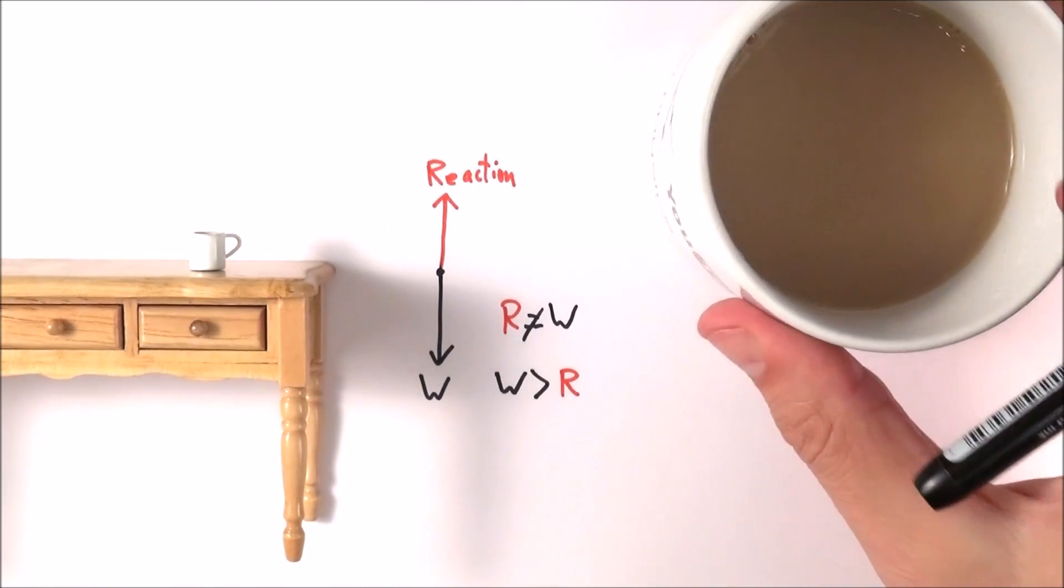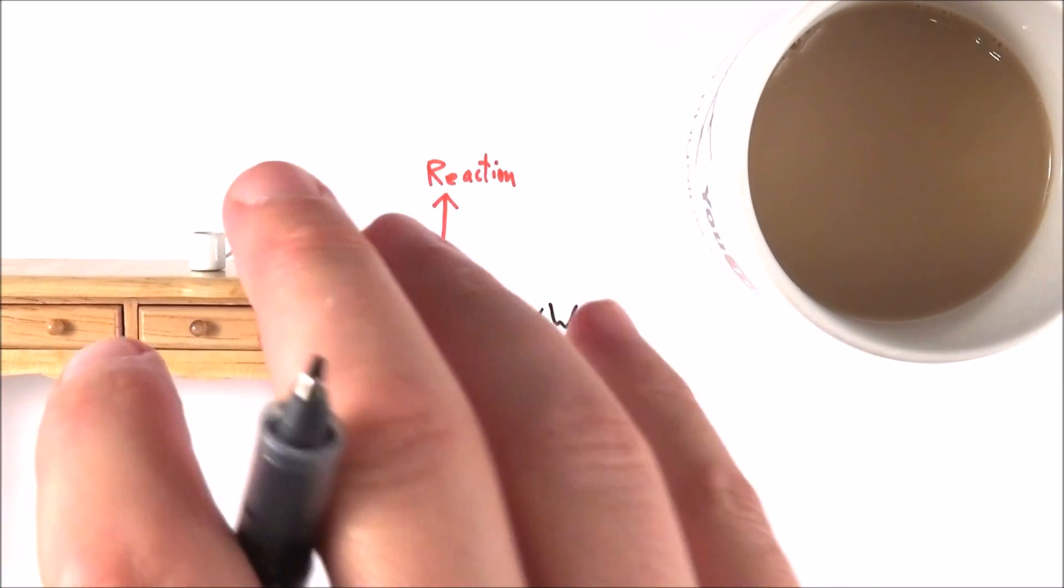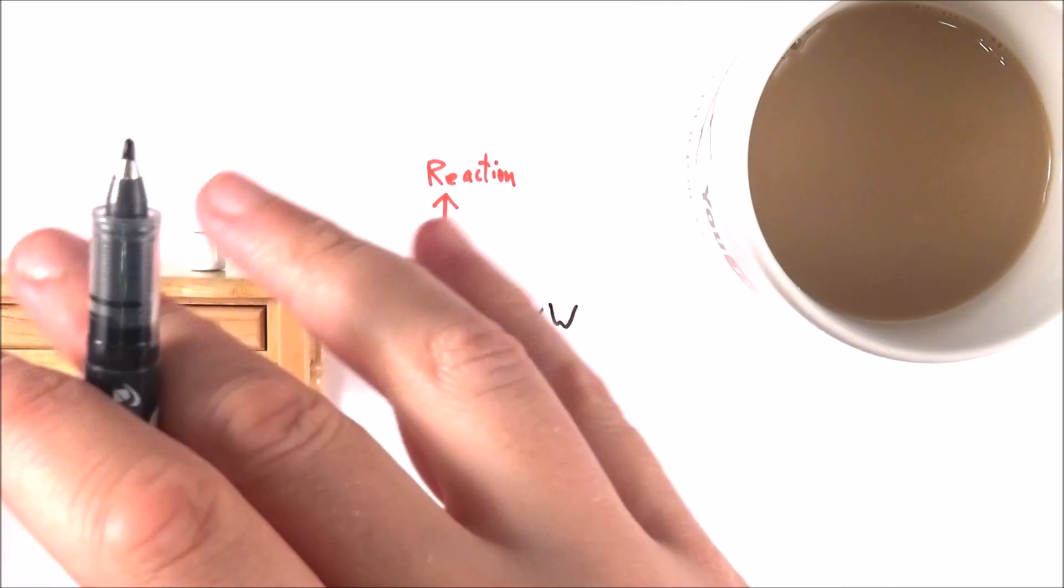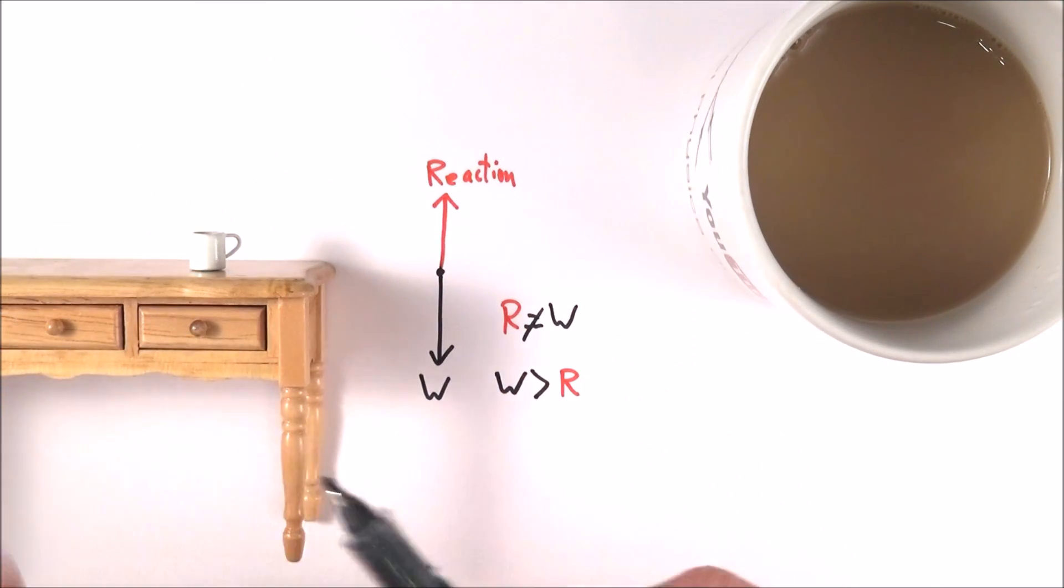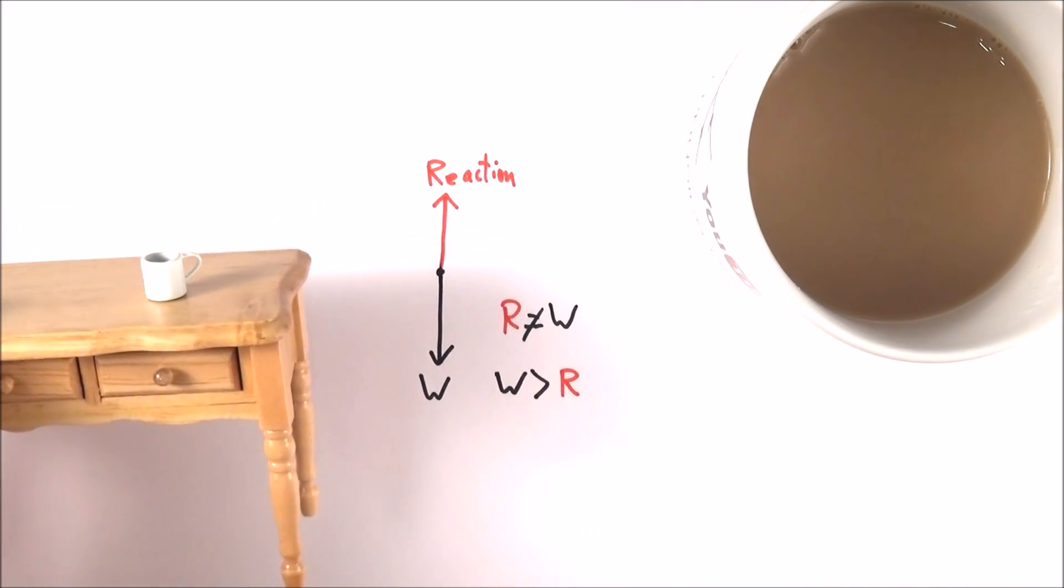Well, it's because this object here is not stationary. Although it might look still here, and especially compared to maybe in reference to the camera that we have up here, if we sort of zoom out and zoom out, we find that actually this table and the mug are on the earth, and the earth is spinning round.